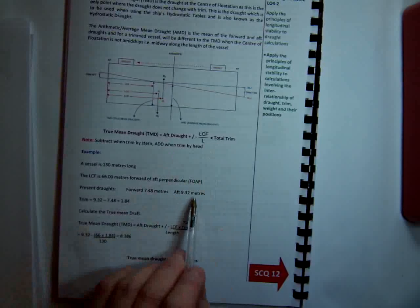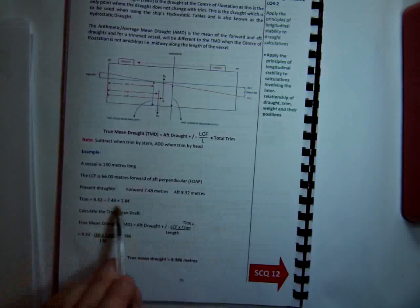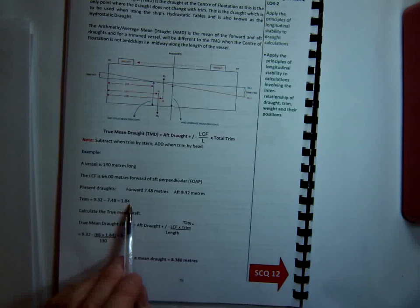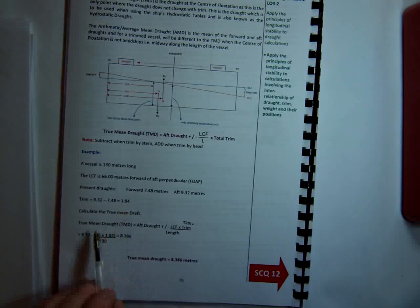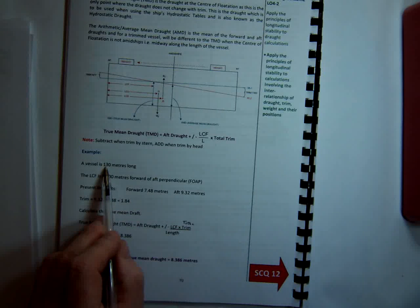So we get our total trim, and our total trim is simply the difference between the two drafts, 9.32 and 7.48. So our total trim is 1.84 metres. So to get the true mean draft, it's the aft draft of 9.32 minus 66 over 130, which is LCF, LCF over length between perpendiculars, multiplied by the total trim.